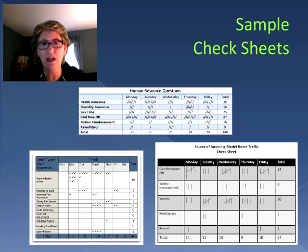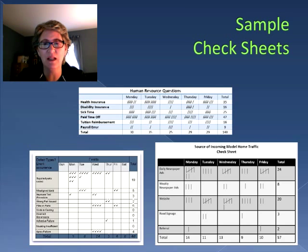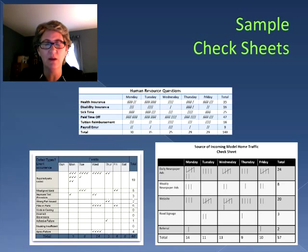Then they check it by day — Monday, Tuesday, Wednesday, Thursday, and Friday. So within a week you can immediately see that the most frequent question is paid time off with a high value of 47, and the least frequent is about payroll errors.